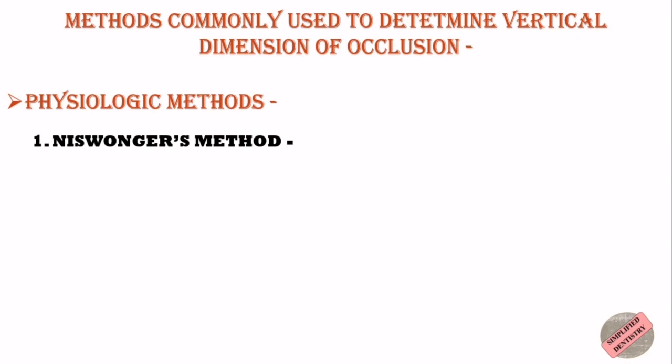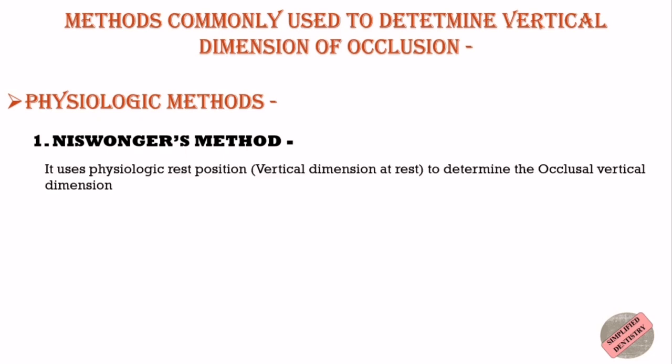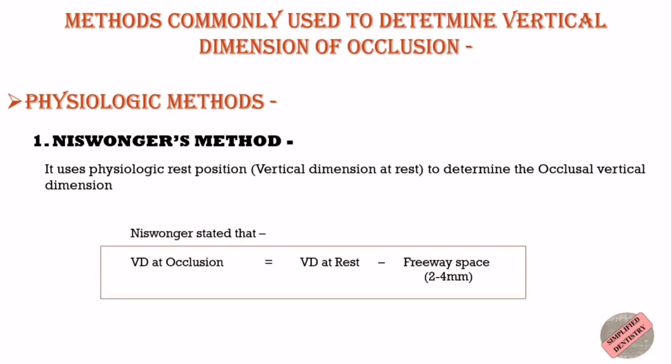The first physiologic method is the Niswonger method, or the physiologic rest position. This is the most commonly used method to establish occlusal vertical dimension. It uses the physiologic rest position — that is, the vertical dimension at rest — to determine the occlusal vertical dimension. Niswonger stated that vertical dimension at occlusion equals vertical dimension at rest minus freeway space, which is 2 to 4 mm.